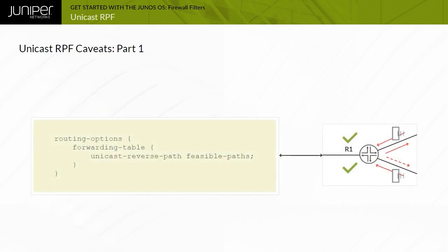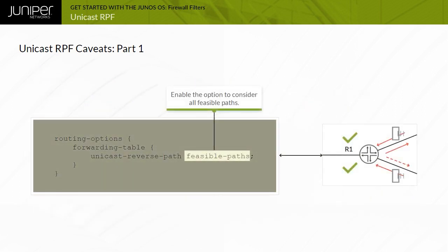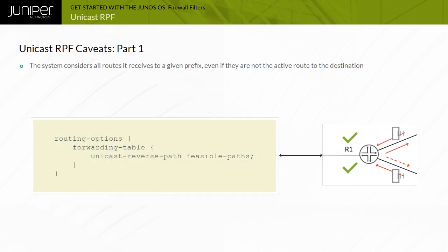To ease this issue, you can require that the system consider all feasible routes to a destination when performing the RPF check. In this mode, the system considers all routes received to a given prefix, even if they are not the active route to the destination. In networks where asymmetric routing is possible, you should activate this option.